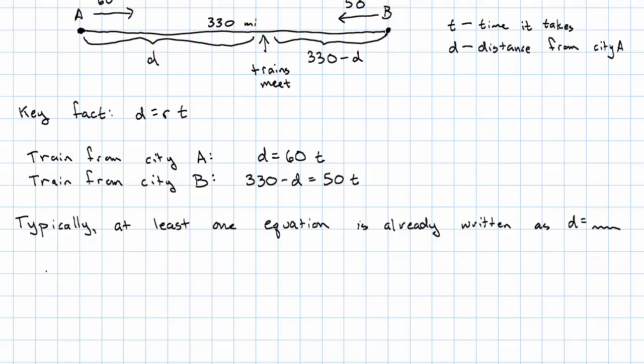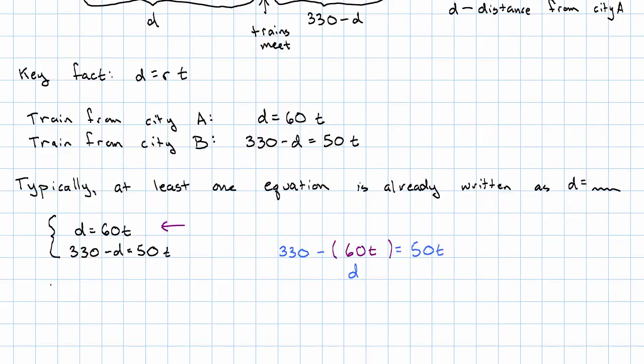So what do we do? Well, here's our system. This first equation already has D written in terms of T. So in the second equation, we have 330 minus D is 50T. We're going to take the D out and replace it by the 60T that is equal to D. And now we have one equation in one variable.